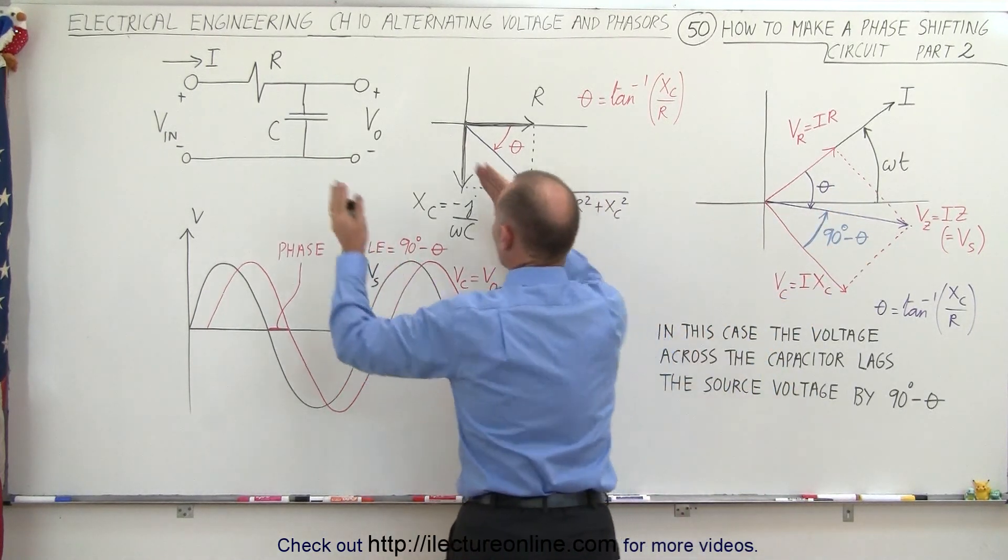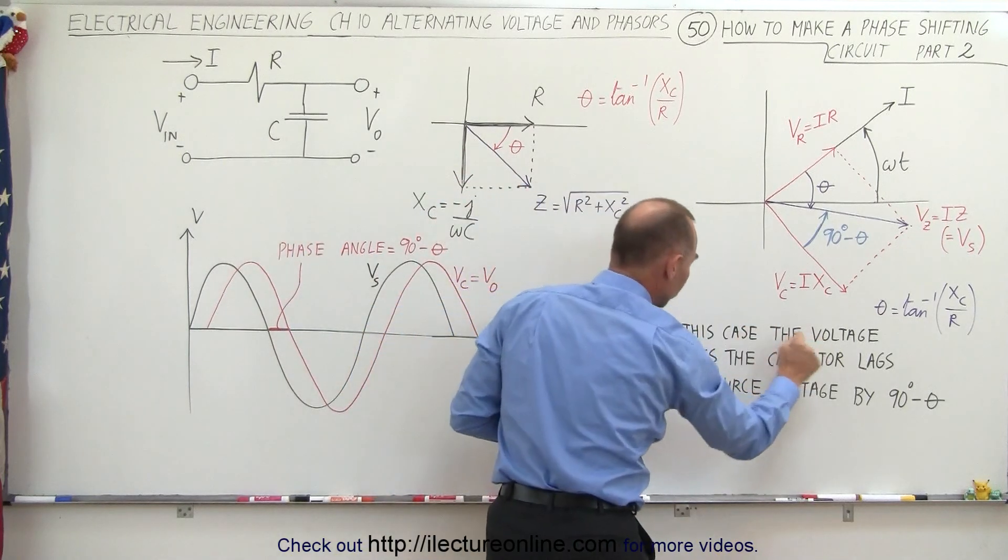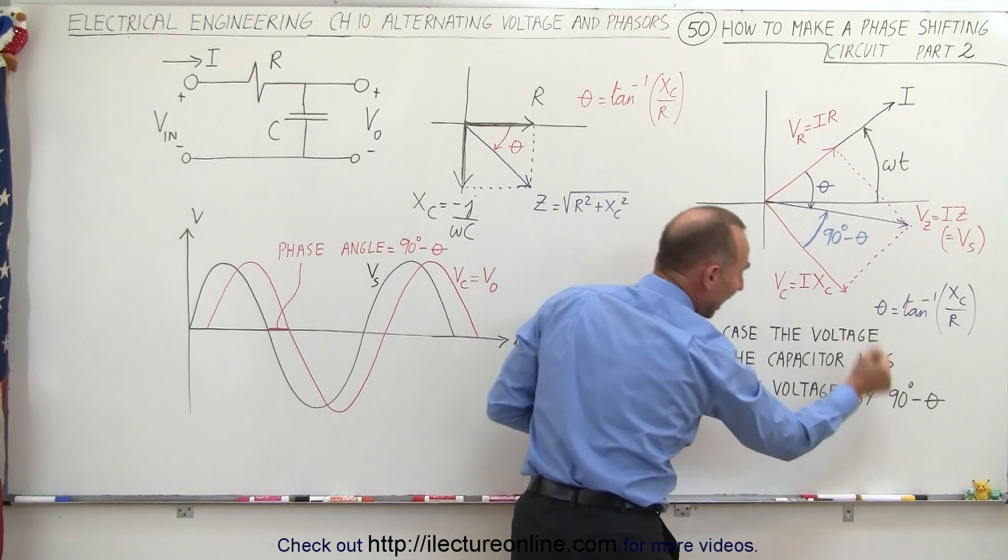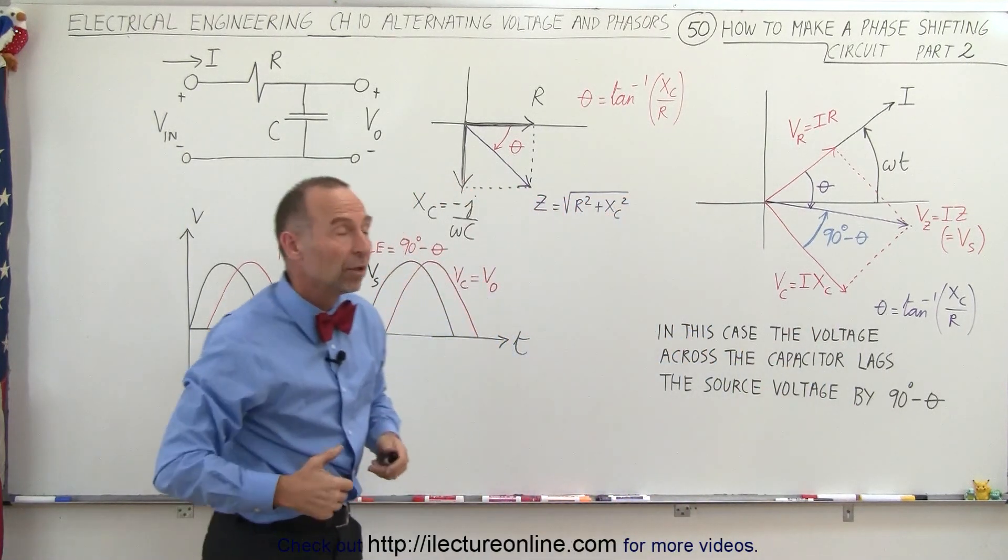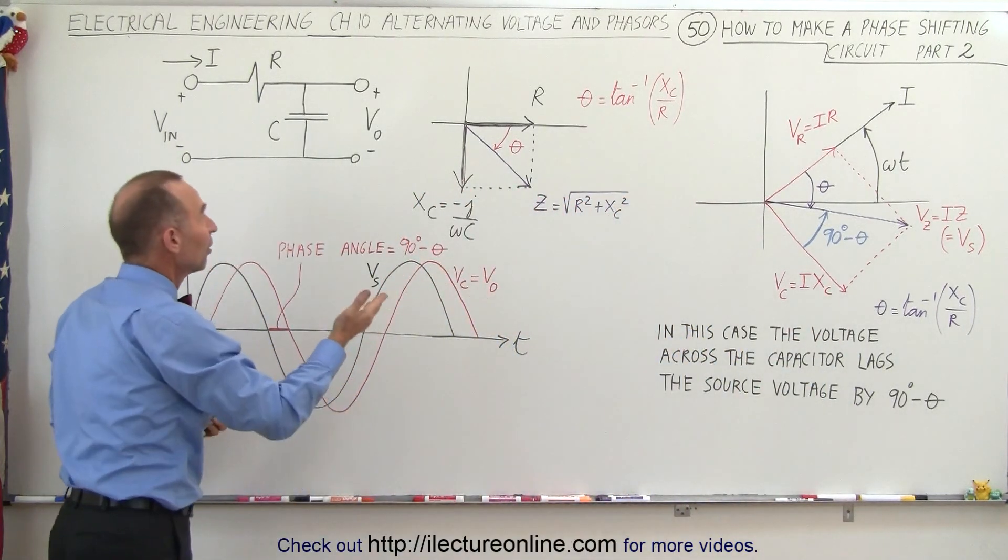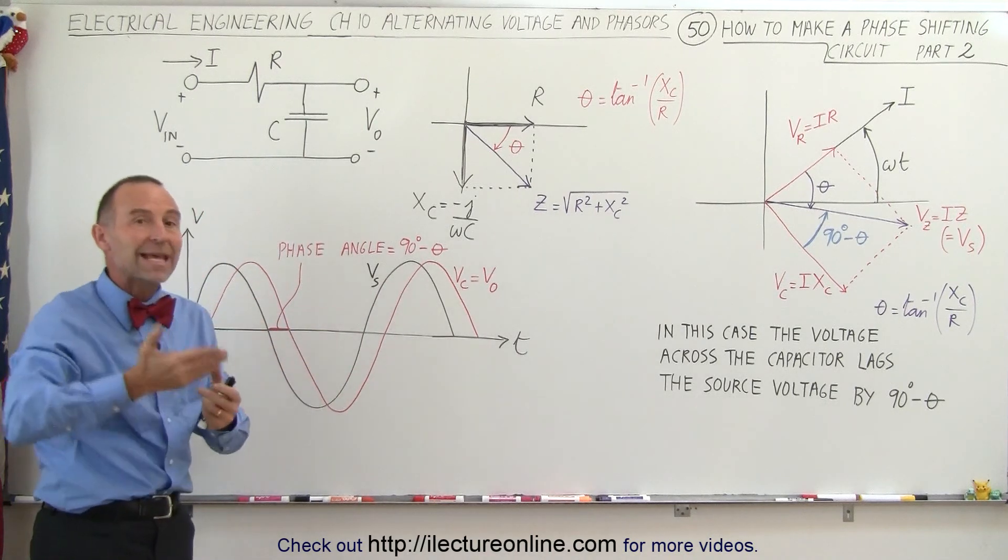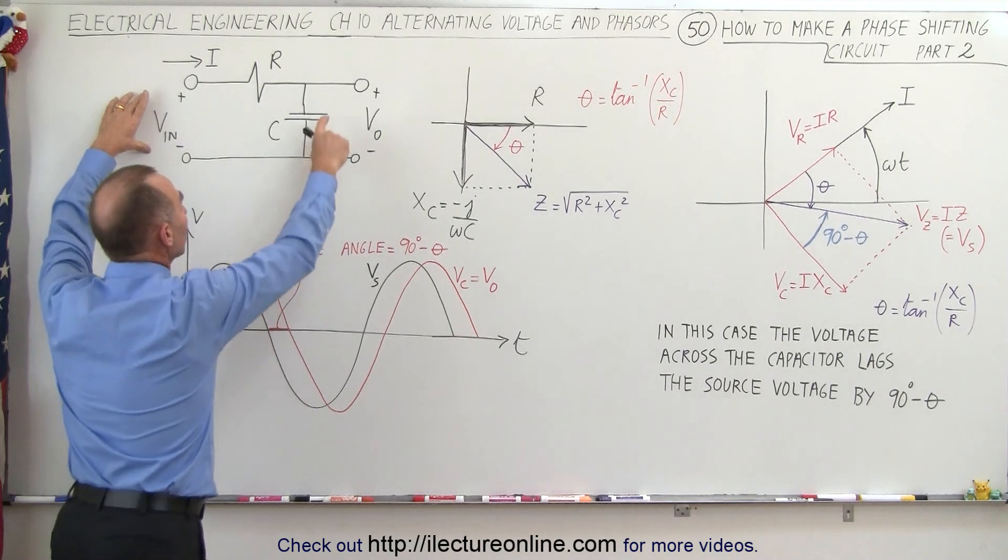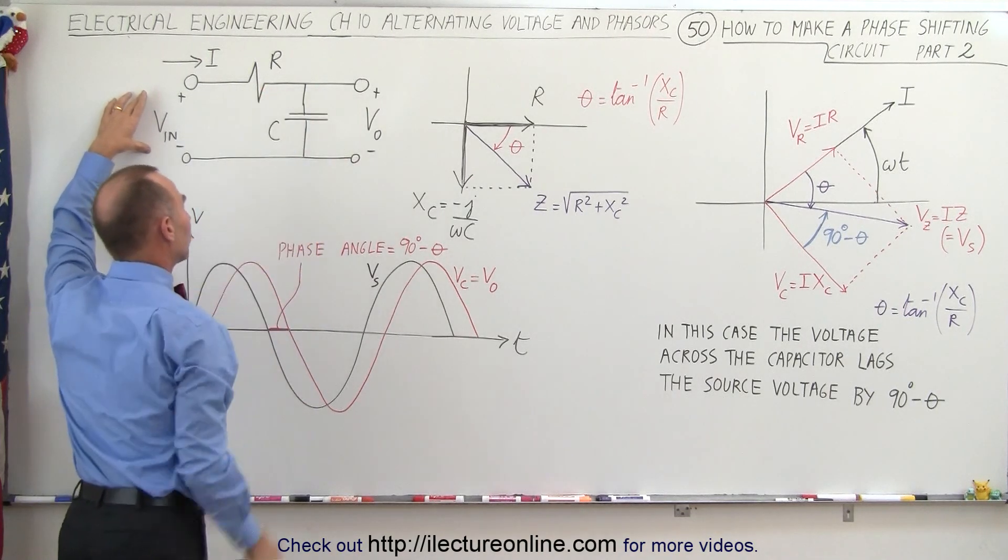Therefore, in this case, when we have the circuit set up like this, the voltage across the capacitor lags the source voltage by 90 degrees minus theta. So that means if you want to shift the output voltage in the opposite direction to be behind the voltage across the input, then we put the capacitor here and we'll put the resistor there.